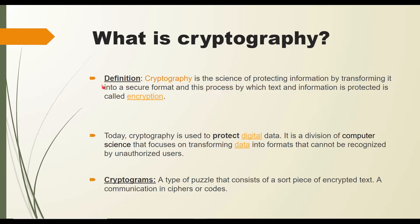Cryptography is the science of protecting information by transforming it into a secure format. This secure format consists of codes — our plain text is converted into code languages that cannot be easily read or understood by an unauthorized person on the network. This process by which text and information is protected is called encryption.